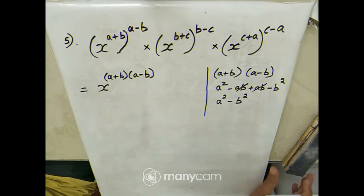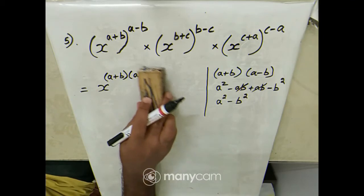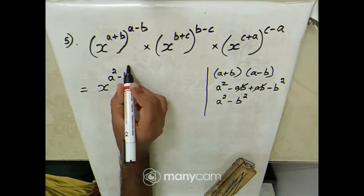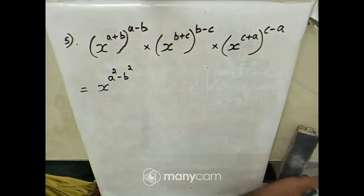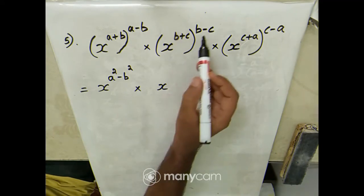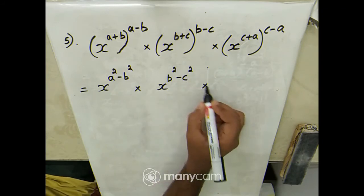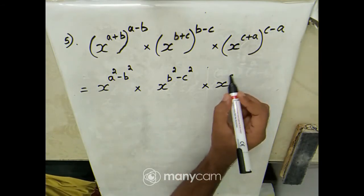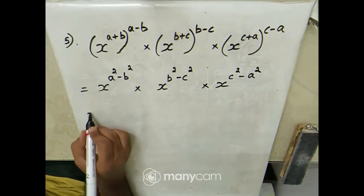So x power (a+b)(a-b) becomes x^(a²-b²). Similarly, x^(b+c)(b-c) becomes x^(b²-c²), and x^(c+a)(c-a) becomes x^(c²-a²).